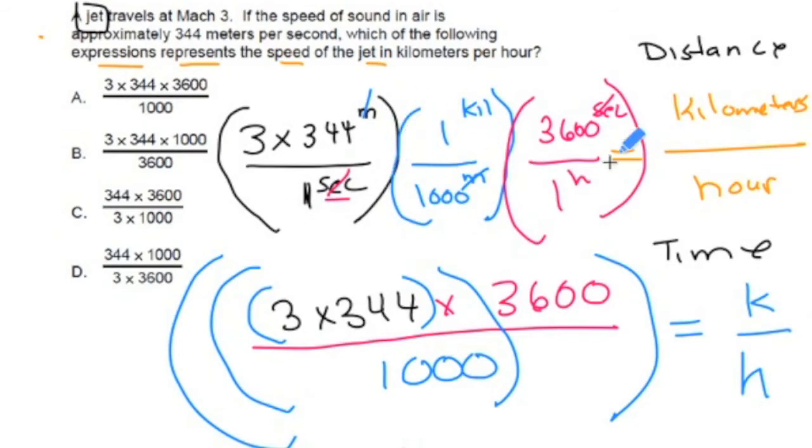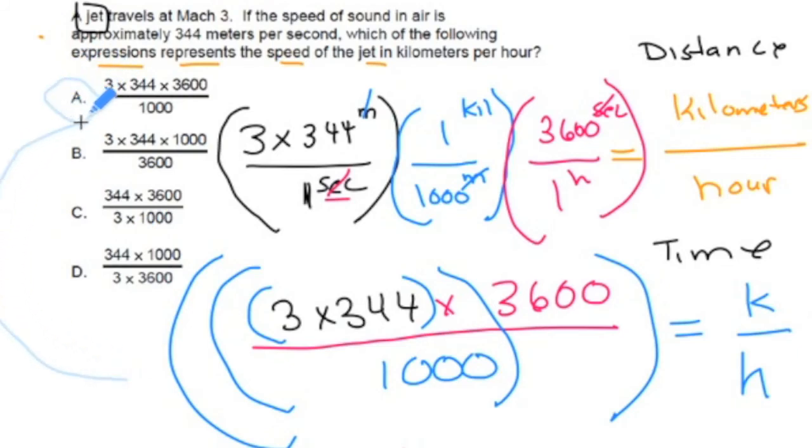Yeah, I know, there's a lot of math going on here, and it is kind of a pain in the neck. Well, I want you to practice this one, set it up, and work through the individual parts. Like, for example, just coming up with this first expression, that this jet plane's traveling three times the speed of sound. Is that right? If you just knew that it's three times 344, and that distance is on the top and time's on the bottom, maybe that's enough to eliminate C and D.